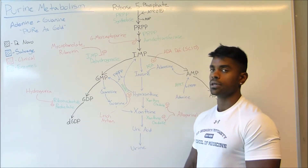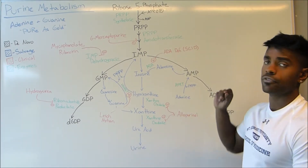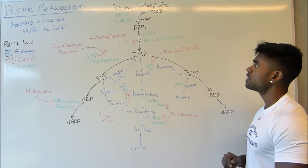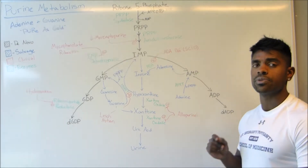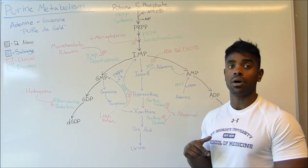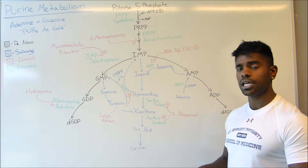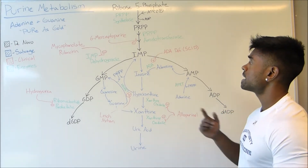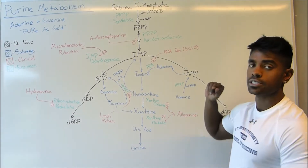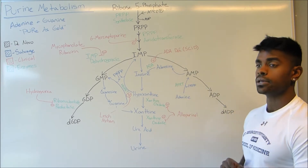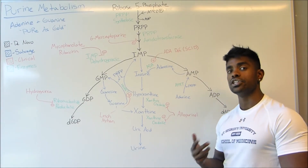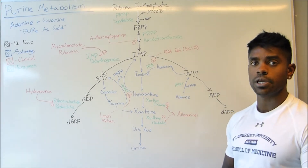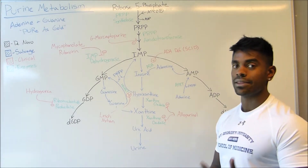Now let's talk about the pathway itself. Our first molecule that we're going to start with is ribose-5-phosphate. Ribose-5-phosphate comes from the HMP shunt, which I have a video on as well. What's going to happen is that it's going to be converted into PRPP by the addition of two phosphates using ATP, done using PRPP synthetase.